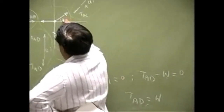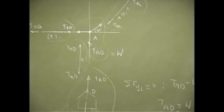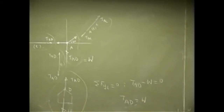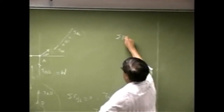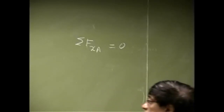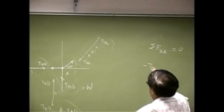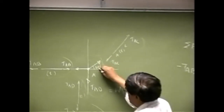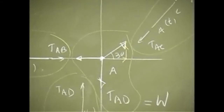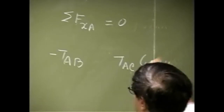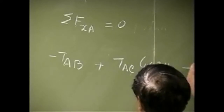From the geometry, we know this angle is 30 degrees. If I consider point A and sum the forces in the x-direction, they should equal 0. You have the force negative TAB, and then the x-component of TAC, which is TAC cosine 30, and that's positive. So: negative TAB plus TAC cosine 30 equals 0.